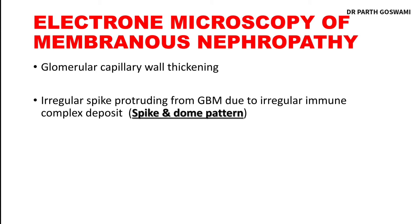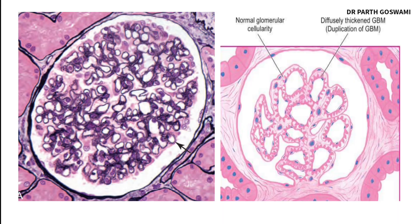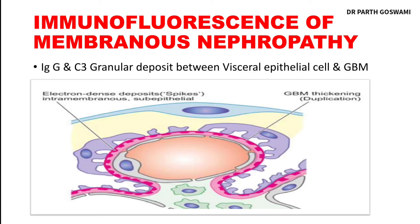These spikes are usually seen on electron microscopy. On electron microscopy, the glomerular capillary wall is thickened and shows irregular spikes protruding from the basement membrane. These protruding irregular spikes give the spike-and-dome pattern, and the spikes are seen because of irregular immune complex deposition.